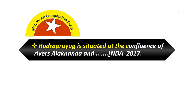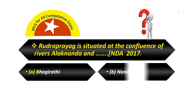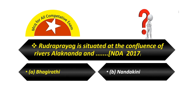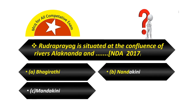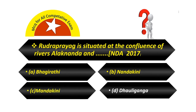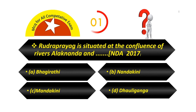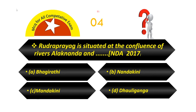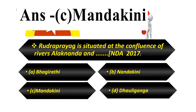Devprayag is situated at the confluence of river Alaknanda and: Option A — Bhagirathi. Option B — Nandakini. Option C — Mandakini. Option D — Dhauliganga. Answer is Mandakini.